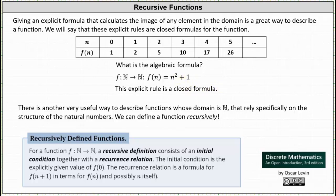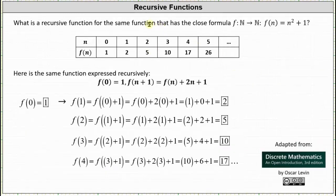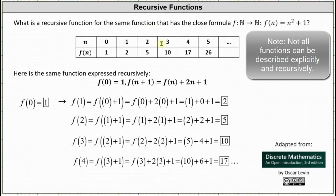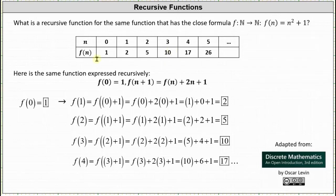Let's see if we can determine the recursive function for the same function shown above. We already know we can describe the function as f(n) = n² + 1. But we can also describe the same function using a recursive definition, where to begin we have f(0) = 1 from the first column in the table, and the recurrence relation is f(n+1) = f(n) + 2n + 1.